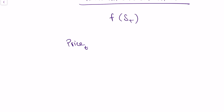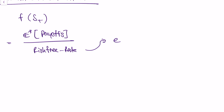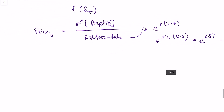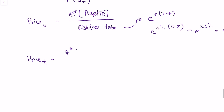In risk-neutral pricing, the price of any asset at time small t (today) is given by the risk-neutral expectation of the payoffs of the asset divided by the risk-free rate. In continuous time, the risk-free rate is defined as the exponential function to the power of the annual return scaled by time. For example, if the annual risk-free rate is 5%, then over half a year the risk-free rate would be e to the power of 2.5%, which equals approximately 1.025. Plugging in this definition, our price at time t is the risk-neutral expectation of payoffs divided by the risk-free rate.